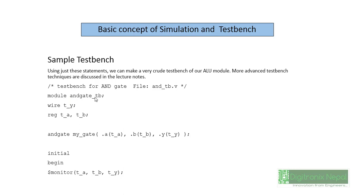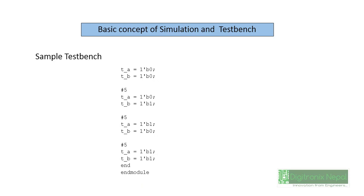Here is the module 'and_gate_tb' — this is the AND gate test bench module. There is no port declaration inside the test bench module. We have some wires and registers: registers are used for inputs and wire is used for output. We also have 'my_and_gate' which is the AND gate design module. The ports are mapped: 'a' is mapped with 'ta', 'b' is mapped with 'tb', and 'y' of the AND gate is mapped with 'ty'. We have an initial block with a monitor line that monitors the states.